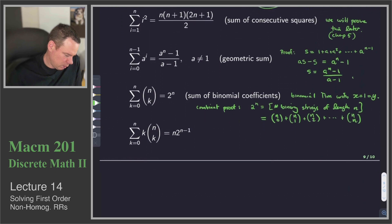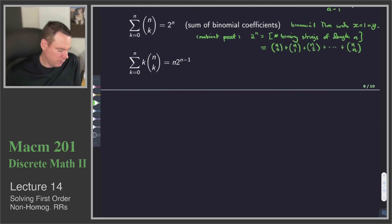How about the last one? This says that the sum of these weighted binomial coefficients, where it's k times n choose k, is equal to n times 2 to the power of n minus 1. There's actually a few ways we can see this. First thing to notice is that I don't need to start the sum at 0, because if k is 0, the first term is 0.